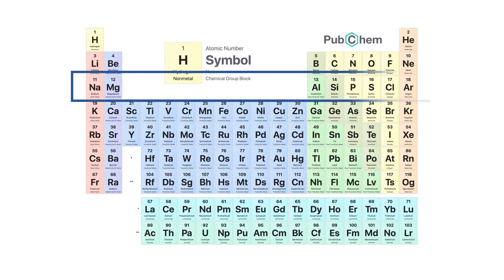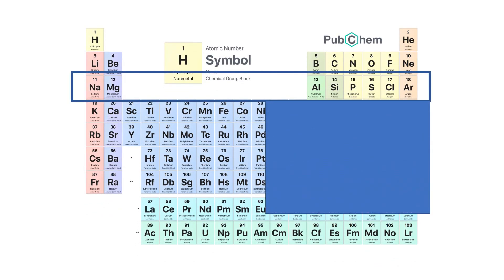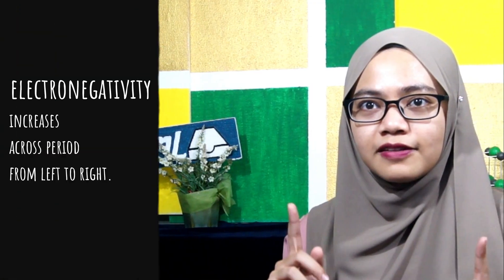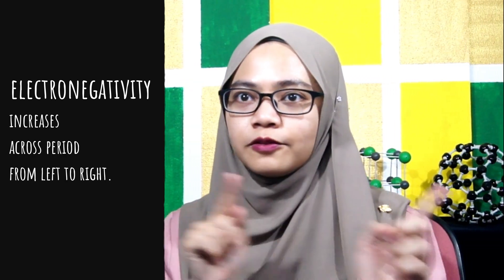Ignore group 18, as noble gases are in it and they do not form bonds. From the periodic table, we know that the most electronegative atom is fluorine. Let's have a look at period 3. As we go across period 3, the electronegativity increases. This shows that chlorine is more electronegative than sodium. We can conclude that electronegativity increases across a period from left to right.